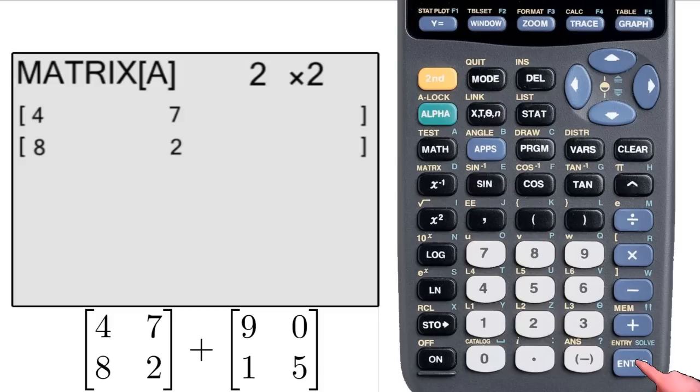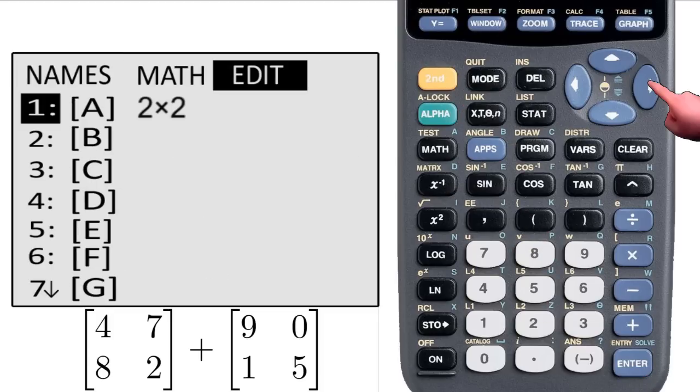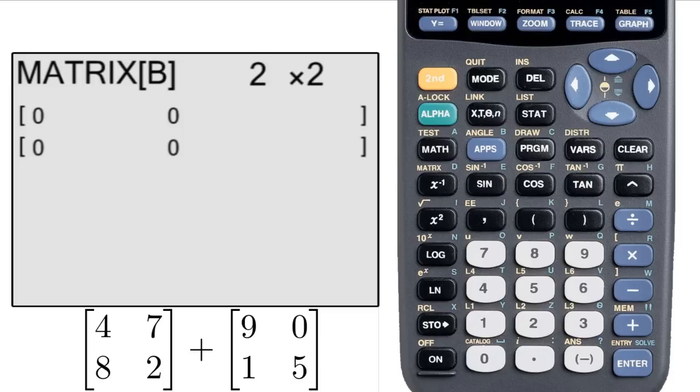Now I go back to the matrix menu, to the Edit page and select B, input 2 by 2 as my dimensions, input my entries.